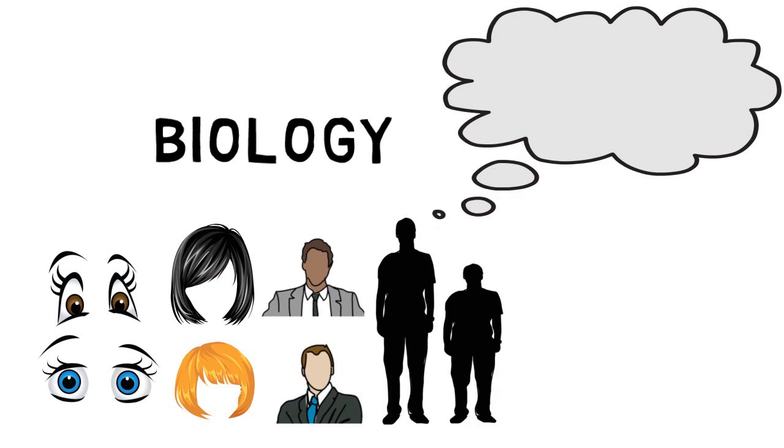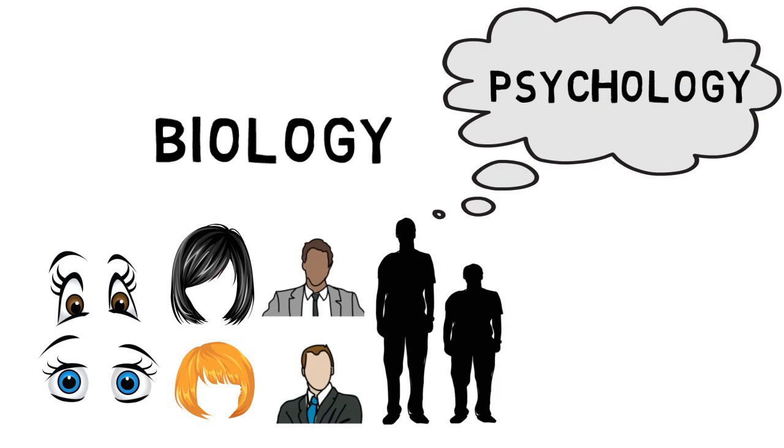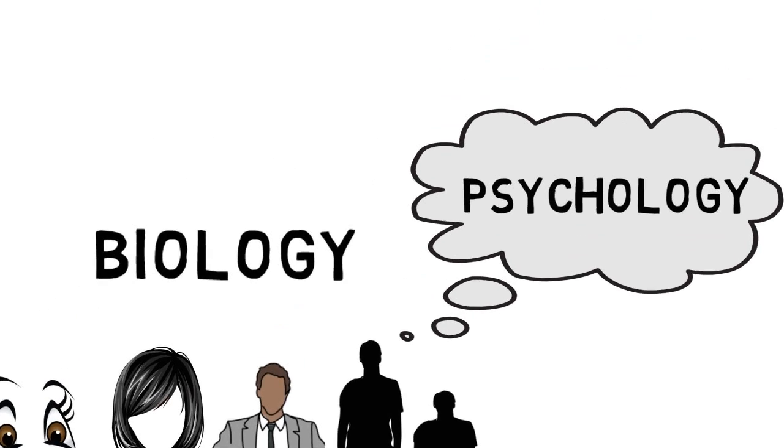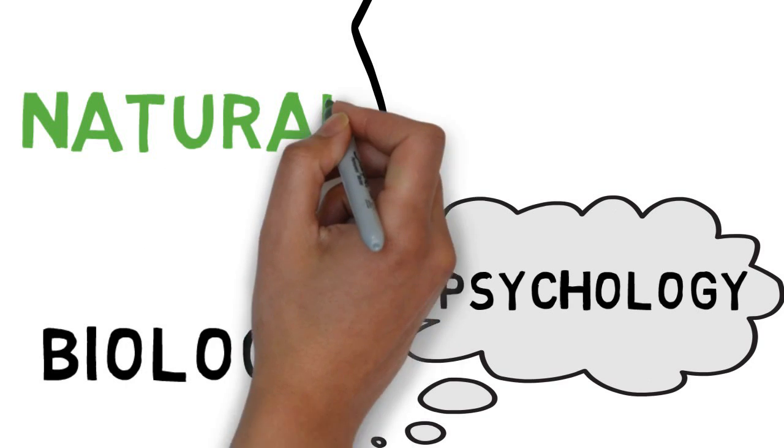Differences in ways of thinking are typically attributed to differences in upbringing, social influences, and psychology. As such, biology and psychology have long been viewed as separate disciplines divided into the fields of natural and social sciences.